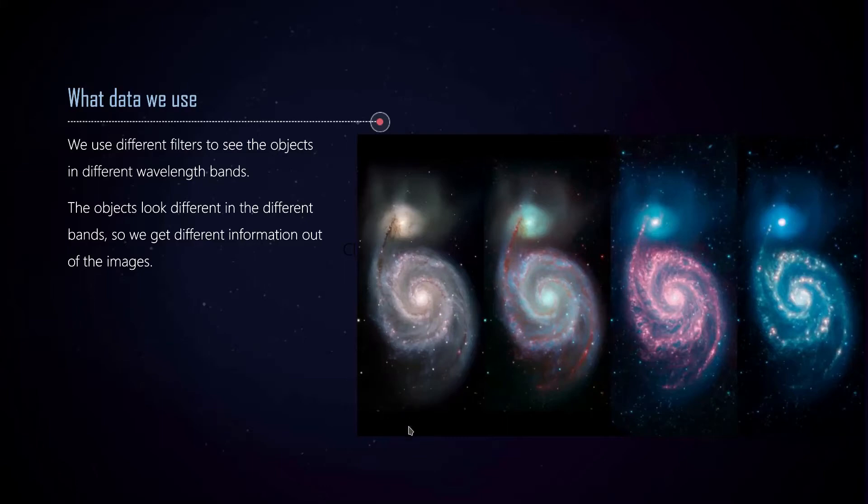This is an example of the Whirlpool galaxy. On the leftmost image, we see it in the normal visible spectrum, how we would see it if we were nearby. The image on the right also adds infrared colors, which we cannot see. The image to the right of that is just the infrared colors, and the rightmost image is the Whirlpool galaxy in ultraviolet.